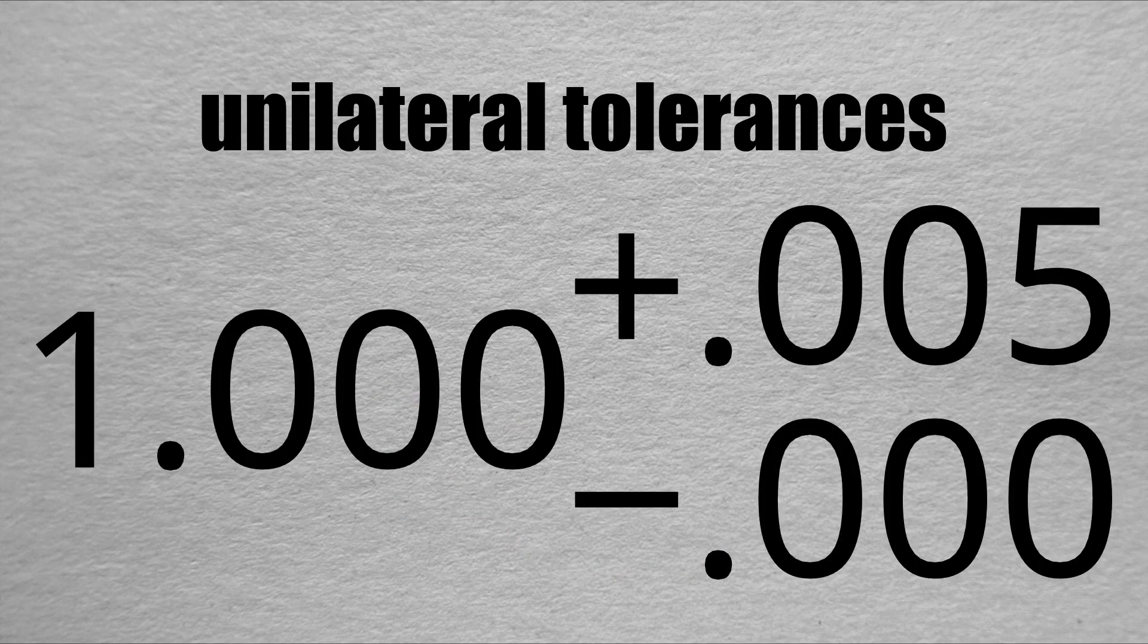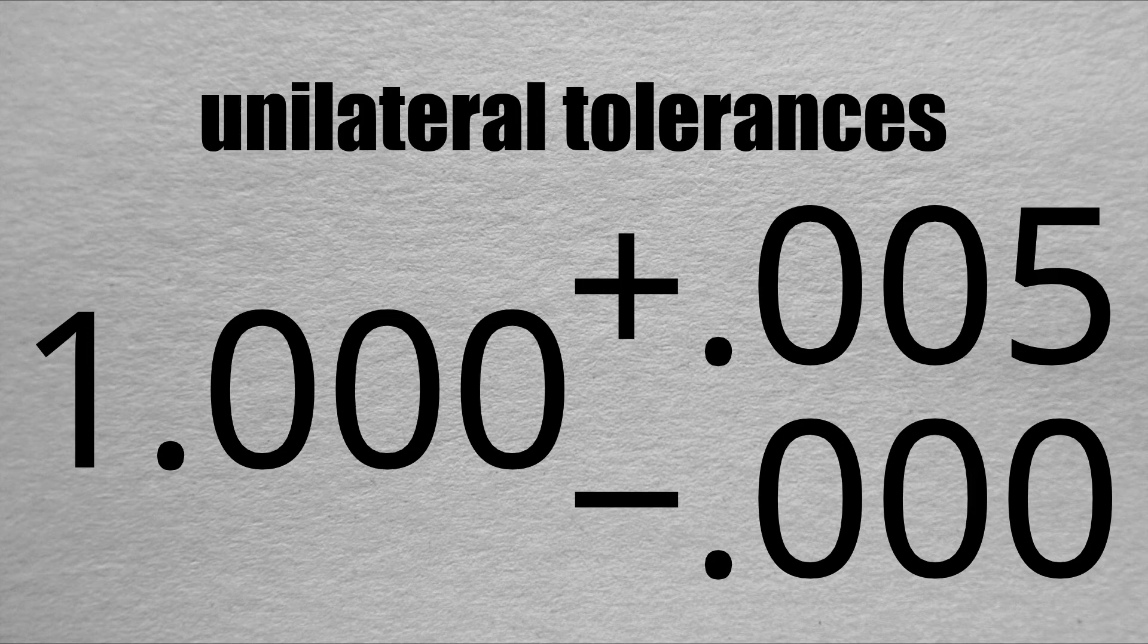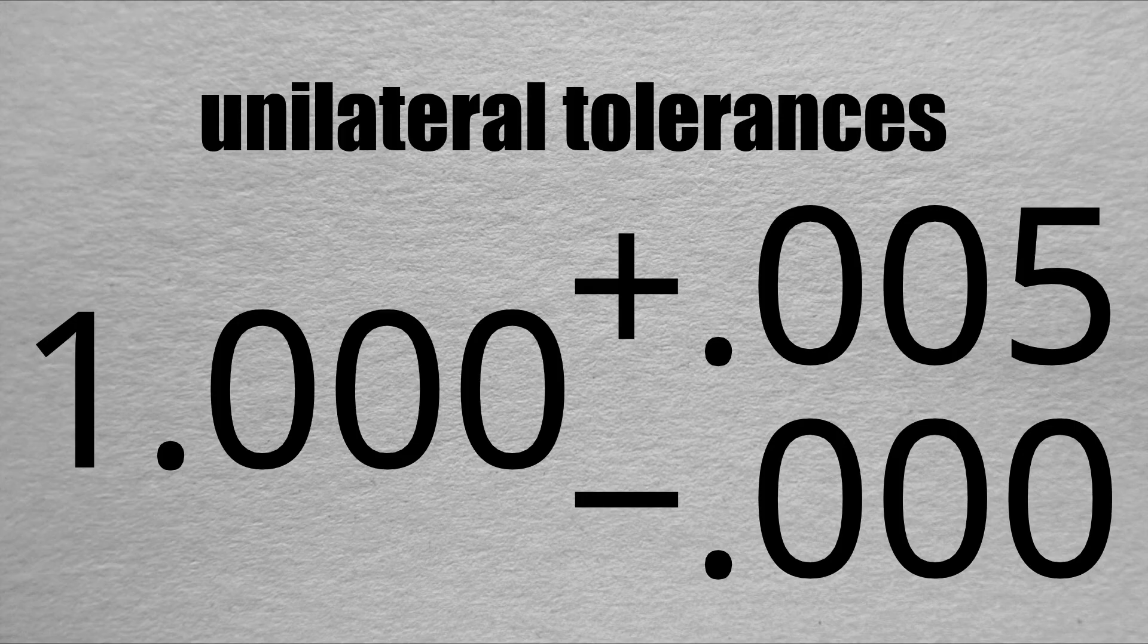Our last type of tolerance is a unilateral tolerance. In this type of tolerance, the specified dimension is used as a maximum or minimum, and the tolerance can be given an amount over or under that number.